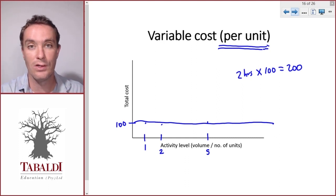So that's a variable cost. It varies in direct proportion to the number of units, or it changes in direct proportion to a change in the activity level.